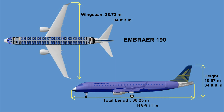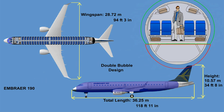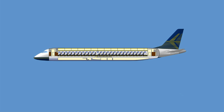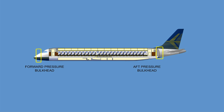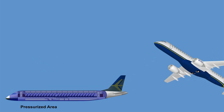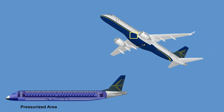The fuselage has a so-called double-bubble design. The fuselage is pressurized between the forward pressure bulkhead, located forward of the cockpit, and the aft pressure bulkhead, which is located behind the aft electronics bay. Normal pressurization control is automatic, and the conditioned air is provided by two air conditioning packs located in the unpressurized area forward of the wing route.